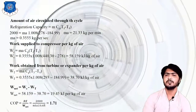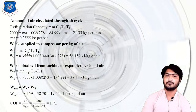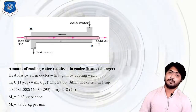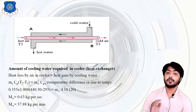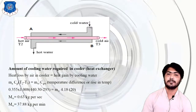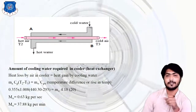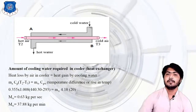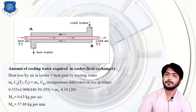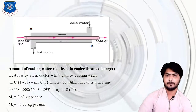COP = refrigeration effect / Wnet, giving COP = 1.71. Now, the key additional calculation in this problem compared to the first: the amount of cooling water required in the cooler (heat exchanger). After compression, how much cooling water is needed to bring the air down to the desired temperature T3? The heat exchanger diagram shows hot compressed air at T2 entering and cool air at T3 exiting.